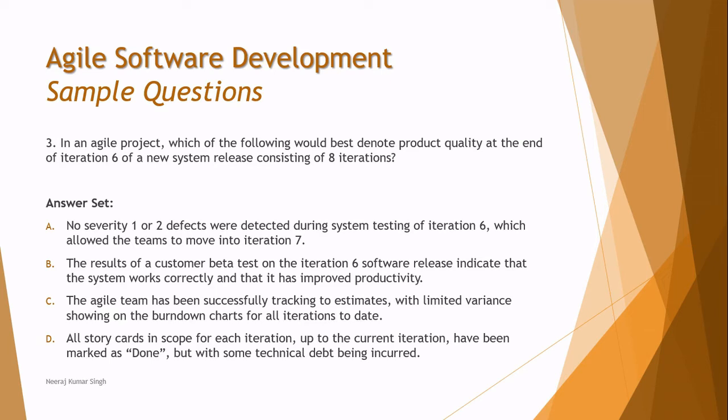Option D: all story cards and scope for each iteration up to the current iteration have been marked as done, but with some technical debt being inaccurate. It's not mandatory that all story cards are completed by the current iteration — you still have two more iterations to cover those things. So the right answer is B.